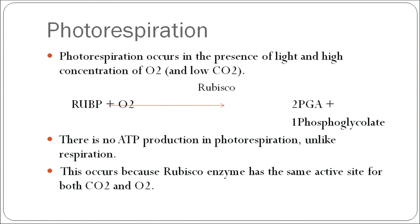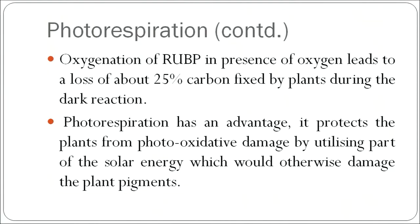Rubisco activates the reaction between ribulose bisphosphate and oxygen, giving rise to phosphoglyceric acid and phosphoglycolate. This phosphoglycolate is further metabolized in mitochondria and peroxisomes; in this process, no ATPs are formed, unlike respiration which produces a large number of ATPs. Oxygenation of ribulose bisphosphate also leads to the loss of carbon dioxide normally fixed by plants in the dark reaction. Photorespiration has an advantage: when excess light damages plants, photorespiration protects the plant from photo-oxidative damage by utilizing that excess light, which would otherwise damage the plant's pigments.